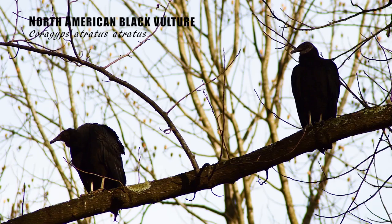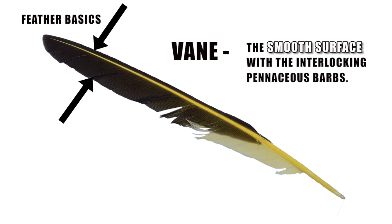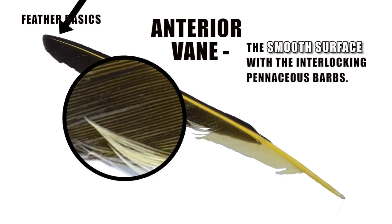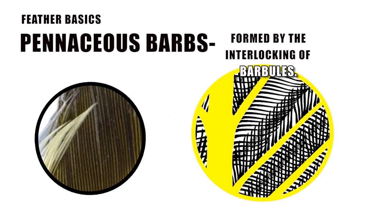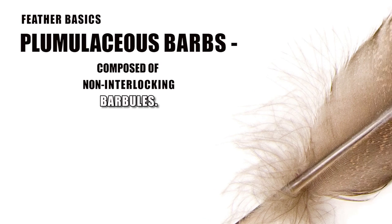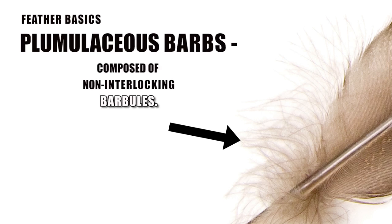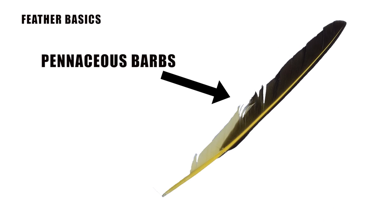Now let's go over some basic feather vocabulary. The vein is what has the smooth surface composed of interlocking pennaceous barbs. The anterior vein is forward and generally smaller, and the posterior vein is the trailing edge, generally larger. Pennaceous barbs are formed by the interlocking of barbules. Plumulaceous barbs have barbules that are not interlocking, so the texture of down or fluff occurs. Some feathers will have both pennaceous and plumulaceous barbs, or just one and not the other.